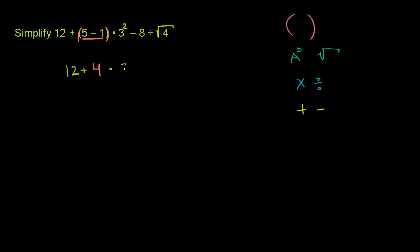times 3 squared minus 8, divided by the positive square root of 4, the principal root of 4. Now we got all our parentheses out of the way.